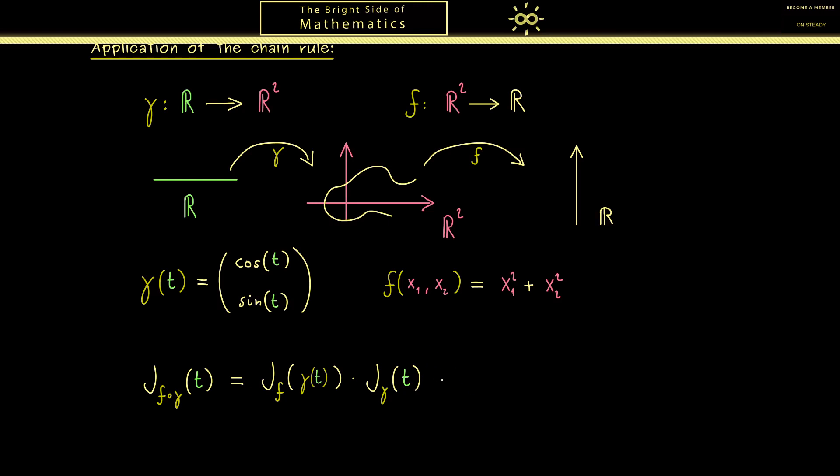Okay and now both matrices here we can easily calculate. First the Jacobian matrix of f would have the partial derivative of f with respect to x₁ in the first component. And in the second column we find the partial derivative with respect to x₂. So this is the whole Jacobian matrix of f. However this is not correct because we have to put in the point γ(t). This means here in the first component instead of x₁ we would have the cos(t). And in the same sense here in the second component we have sin(t). Okay and now this Jacobian matrix is correct.